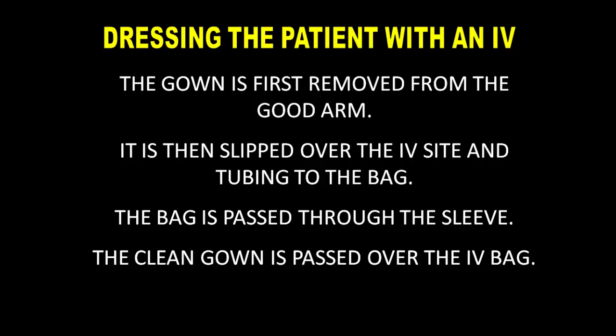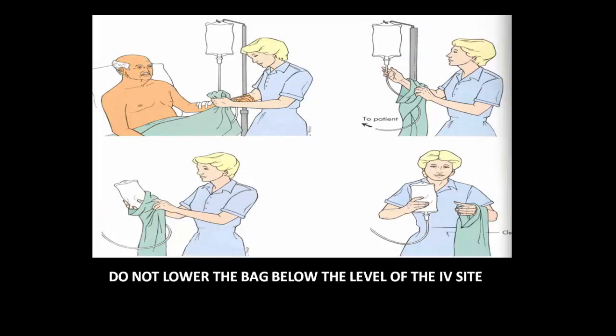Dressing the Patient with an IV: The gown is first removed from the good arm, then slipped over the IV site and tubing to the bag. The bag is passed through the sleeve. The clean gown is then passed over the IV bag. Do not lower the bag below the level of the IV site.